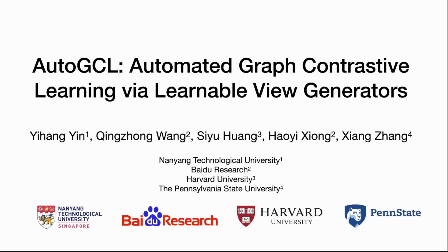Furthermore, we propose a joint training strategy to train the learnable view generators, the graph encoder, and the classifier in an end-to-end manner. Auto-GCL is able to generate topologically different yet semantically similar contrastive samples. Extensive experiments on semi-supervised learning, supervised learning, and transfer learning demonstrated the superiority of our framework over the state-of-the-art in contrastive learning, and our work is now open-sourced.